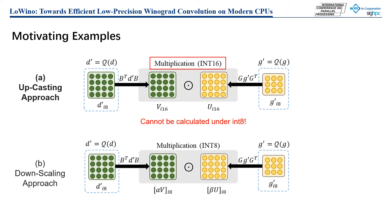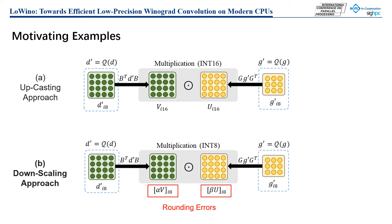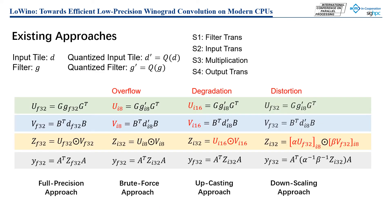However, this solution results in performance degradation because the matrix multiplication operation must be calculated under INT16. Downscaling is another solution used in the ONEDNN library. It scales the transformed matrix into INT8 by multiplying a scaling factor calculated according to the values of the transformation matrix. Unfortunately, the downscaling operation also introduces rounding errors when scaling data from FP32 to INT8. The existing methods, upcasting and downscaling, have limitations for performance or precision.